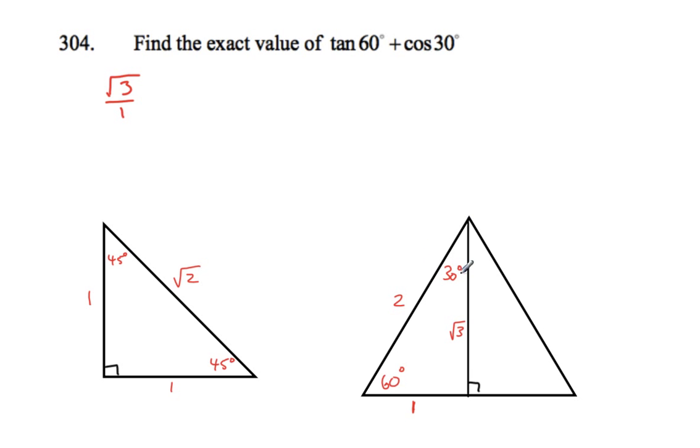Cos 30, go to the 30 here and we're doing cos is adjacent over hypotenuse. So we've got root 3 on 2, I believe.